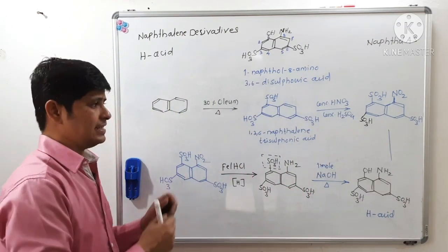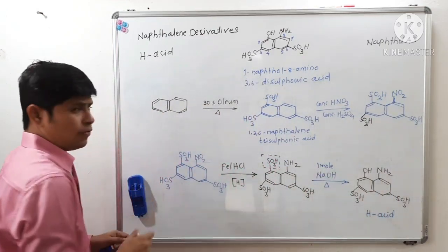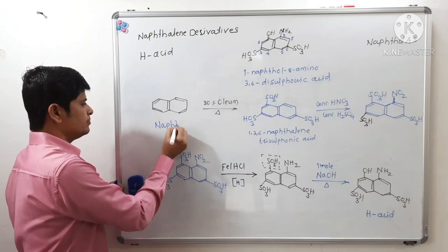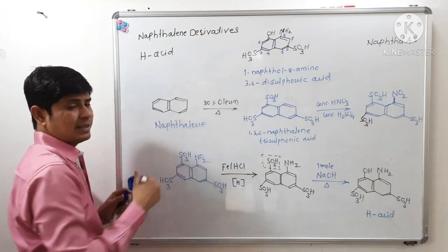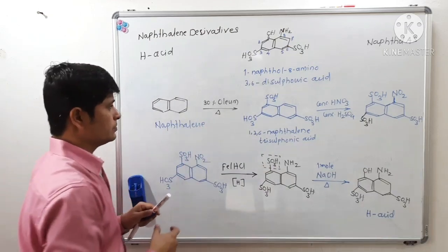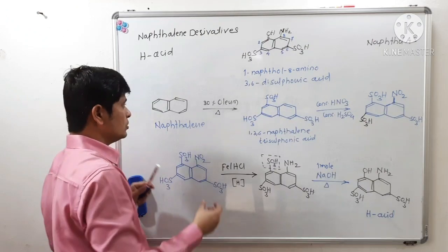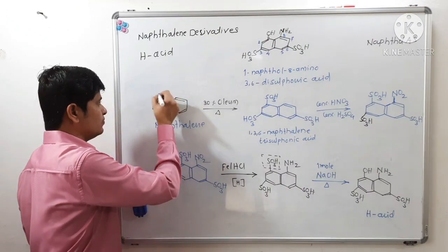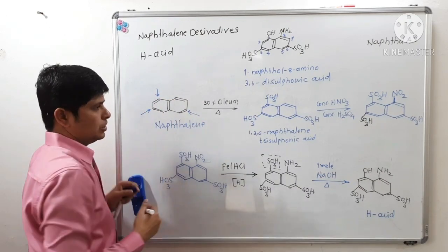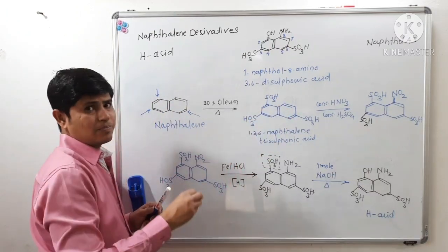Let us see how H-acid can be prepared once again. For the preparation of H-acid, naphthalene is reacted with 30% oleum on heating, giving a trisulfonated product. There will be introduction of sulfonic acid groups at positions 1, 3, and 6 to get 1,3,6-naphthalene trisulfonic acid.